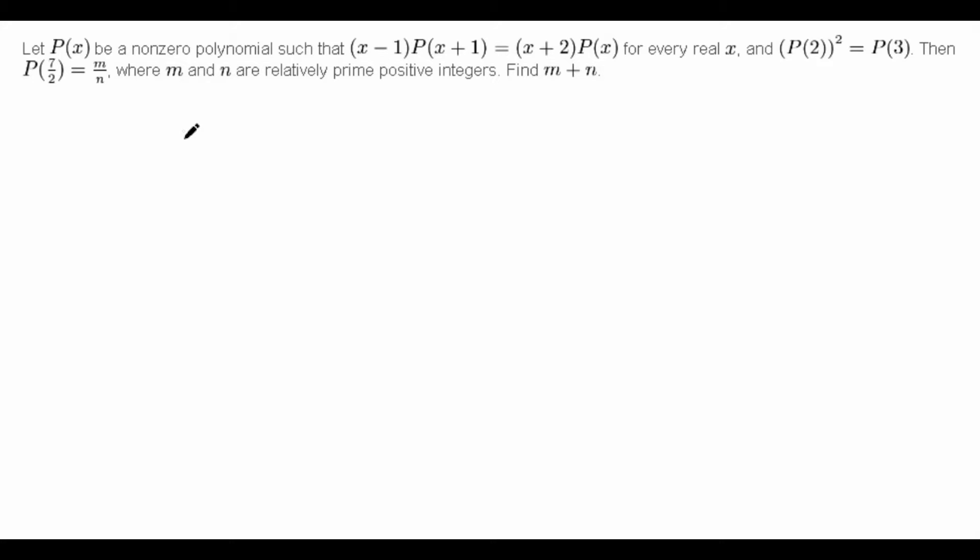Let P(x) be a non-zero polynomial such that (x-1)P(x+1) is equal to (x+2)P(x) for every real x, and P(2)² is equal to P(3). And we want to find P(7/2).